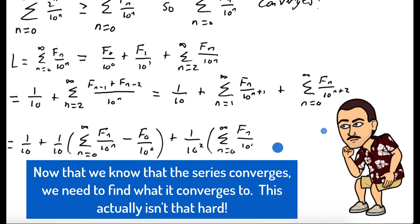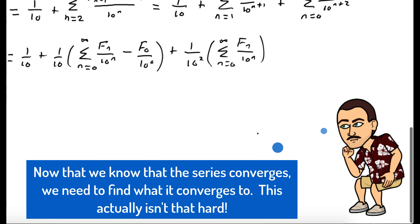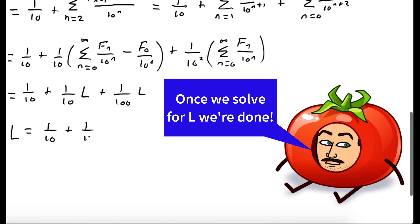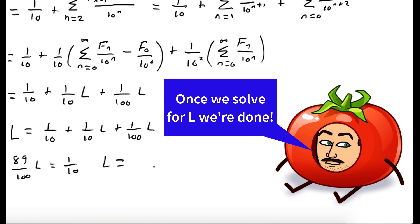That gives us 1 over 10 squared times the sum from n equals 0 to infinity of fₙ over 10 to the n. In the middle term, f₀ is 0, so we discard it. What we're left with is 1 tenth plus 1 tenth of L plus 1 one-hundredth of L, and this is all equal to L. So L equals 1 tenth plus L over 10 plus L over 100. Grouping the L terms: 89 one-hundredths of L equals 1 tenth, giving us L equals 10 over 89. So the sum from n equals 0 to infinity of fₙ over 10 to the n converges to 10 over 89.